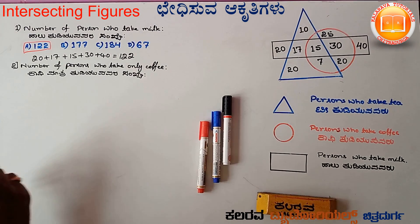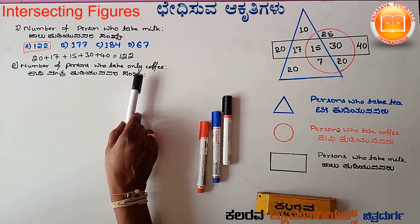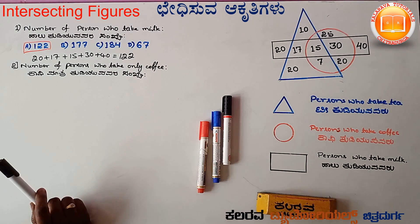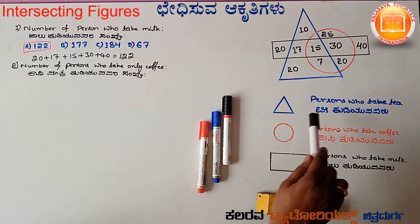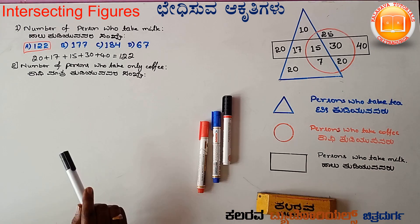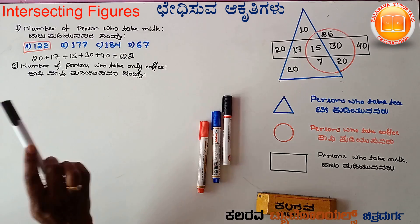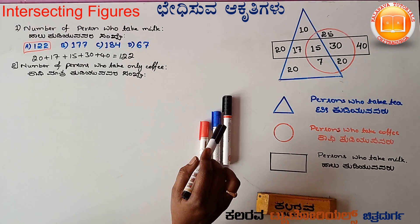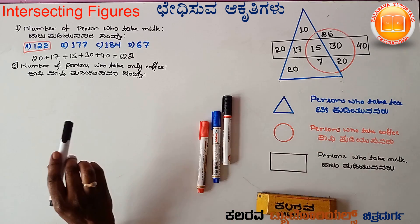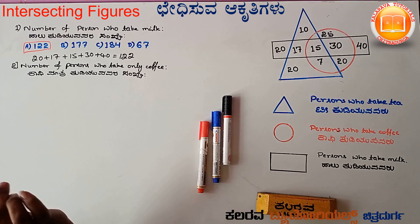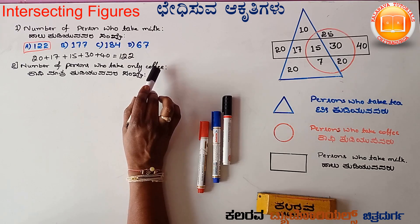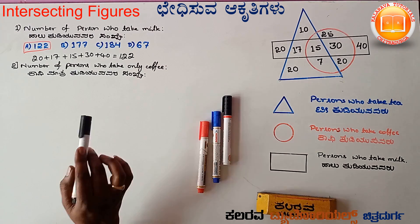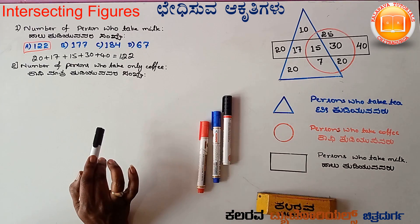So the second question is: number of persons who take only coffee. Only coffee means we look only inside the circle, not overlapping with anything else. Now we have to count the numbers which are only inside the circle.